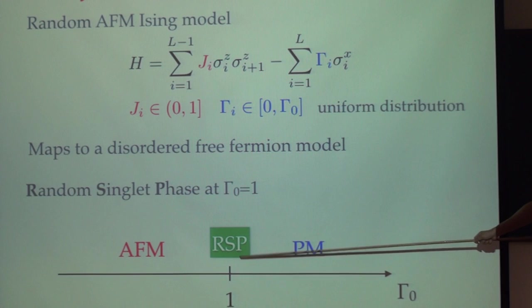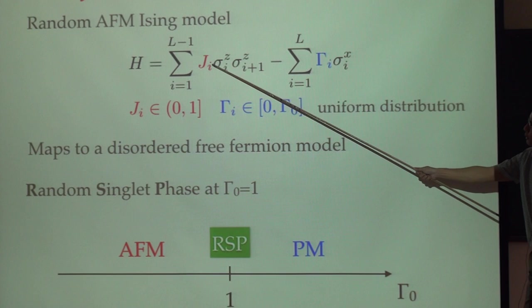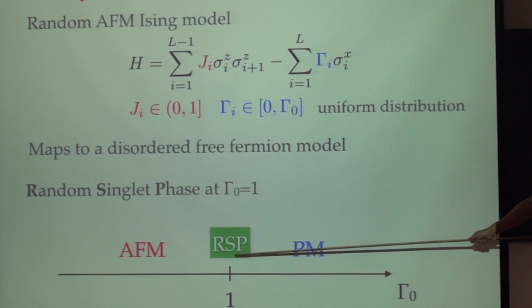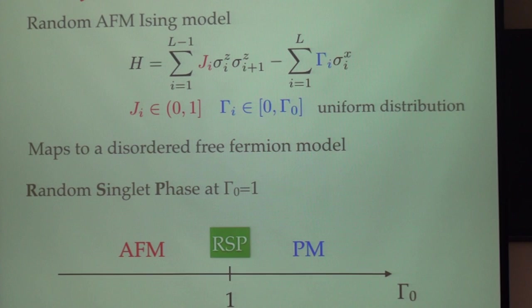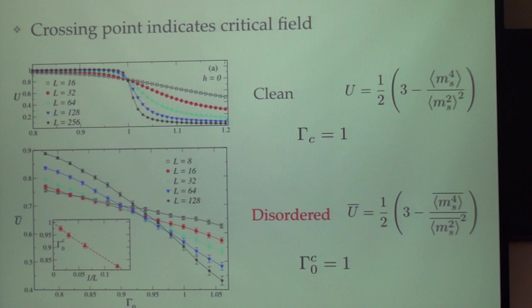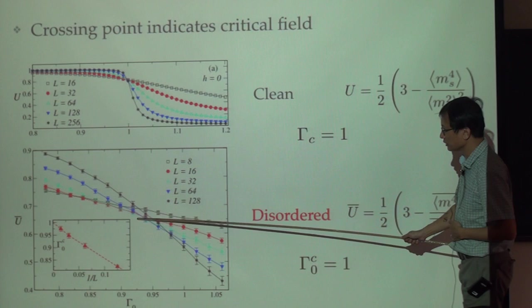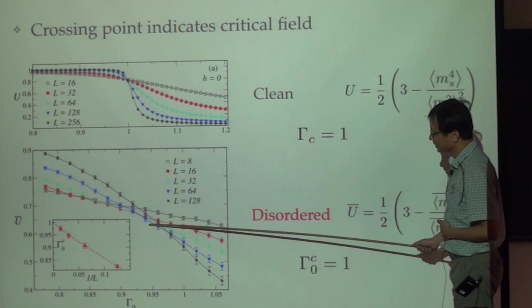We know that there's a phase transition from antiferromagnetic disorder, and even with disorder there's an antiferromagnetic transition to a ferromagnetic transition. And the interesting thing is this critical point is a so-called random singlet phase, basically this is infinite randomness fixed point. We can do a lot of standard calculations, for example we can calculate binder cumulant, and with disorder we can identify actually there's a phase transition.